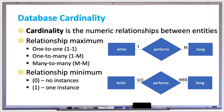Relationship minimum is the smallest number of instances that an entity can relate to a single row of another entity. Each of the related entities has a relationship minima, which are denoted as either one or zero in parentheses. There are times when the minimum number can be bigger than one, such as two.